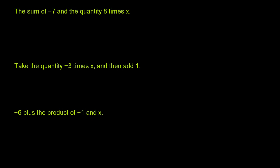What I want to do in this video is write the algebraic expressions that represent the same thing that these statements are saying. So this first statement: the sum of negative 7 and the quantity 8 times x. We're going to have an addition here. The quantity 8 times x is just 8x. So it is negative 7 plus 8x — the sum of negative 7 and the quantity 8 times x.